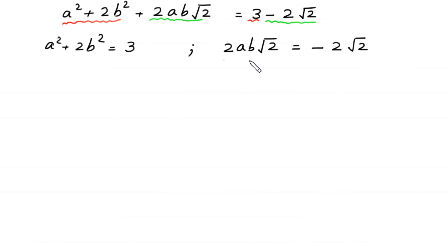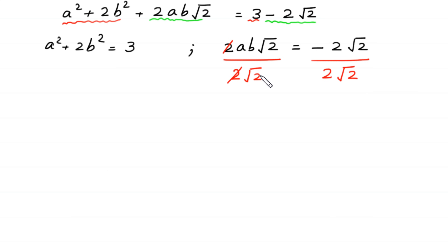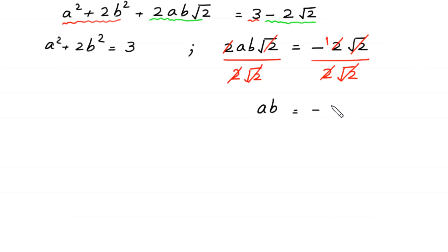From the equation 2ab√2 = −2√2, we divide both sides by 2√2. The 2 and √2 cancel on both sides, leaving ab = −1, and dividing both sides by a gives b = −1/a.